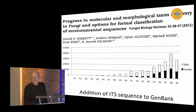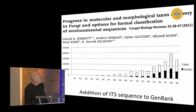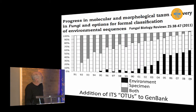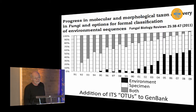Pedro has his favorite tables. This is one of my favorites because it shows the addition of ITS sequences to GenBank — white ones have a specimen, black ones have no specimen. And if you look at the addition of operational taxonomic units, as Jingzhong had the same slide, you can see that those that are environmental only, not based on a specimen, now exceed those with a specimen, which is a frightening thought.